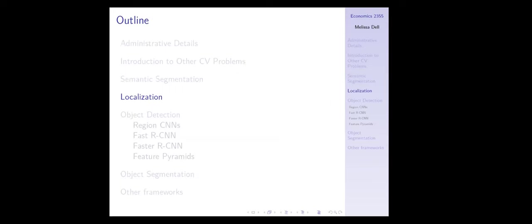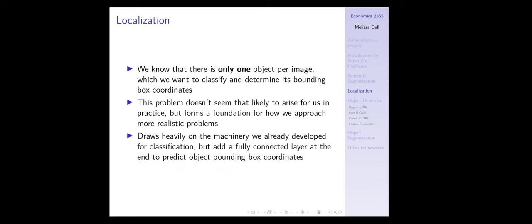We were briefly going through localization at the end of last class, so I want to come back and touch on this again. The definition of localization is there's only one object per image. We want to classify what kind of object it is — a cat, a dog, a truck — and determine the coordinates of its bounding box. This draws heavily on the machinery we already developed for classification, but adds an additional fully connected layer at the end to predict object bounding box coordinates.